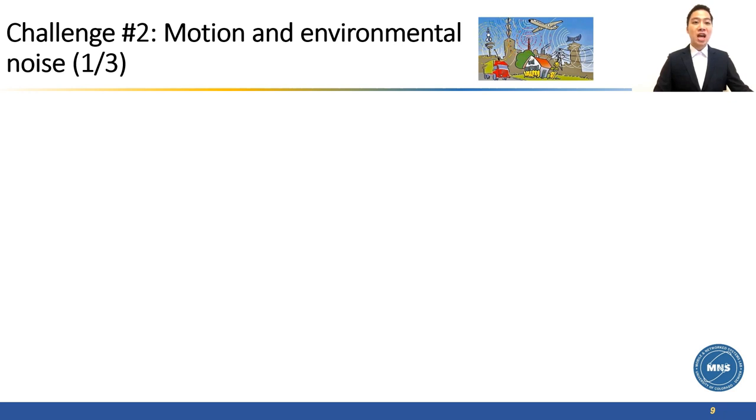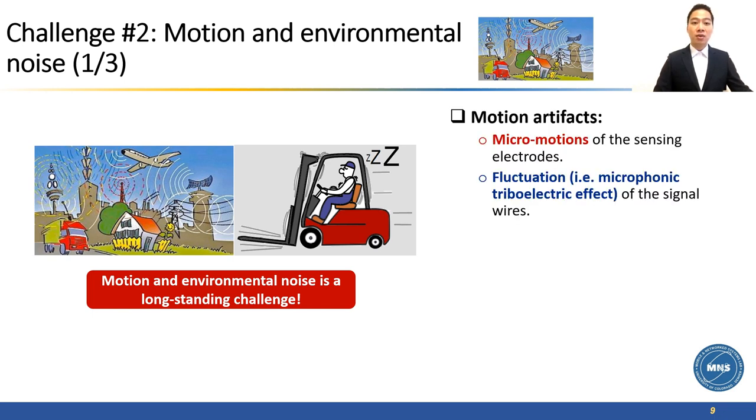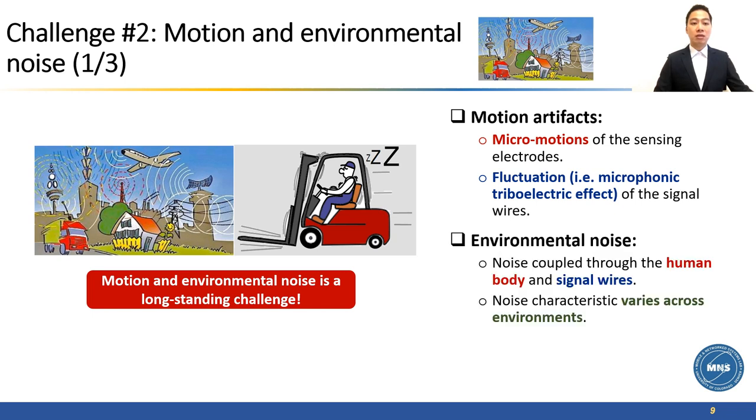One of the most important challenges of designing a reliable wearable device is to cancel out the noise created by human motion and coupled from the environment. From our in-lab experiment, we can observe that environmental noise can have a significant impact on the captured signal, while motion can completely distort the signal. According to the literature, there are two main sources of motion artifacts: micro movement of the sensing electrodes, and microphonic triboelectric effect of the signal wires. They lead to the fluctuation in the electrical pathway, resulting in noise. Radio and electromagnetic interference from various appliances can be easily coupled into human body and signal wires which act as antennas. To make it more challenging, depending on the environment, the noise could vary. So a solution also needs to work across different environments.